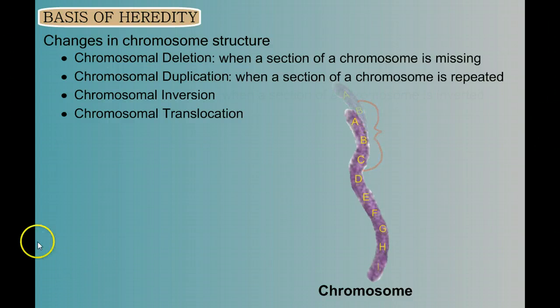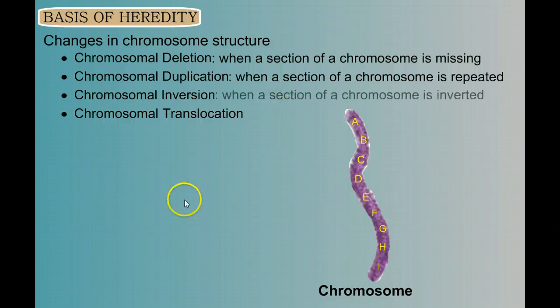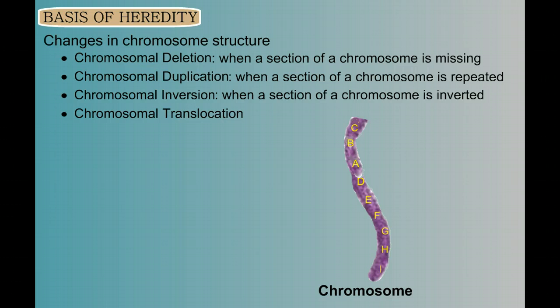How about chromosomal inversion? So when a section of chromosome is inverted, so it breaks off, turns over, and reattaches. Now, we didn't lose any genes and we didn't gain any genes, but we did change the order. Instead of ABCD, it's now CBAD. And sometimes the order is important.